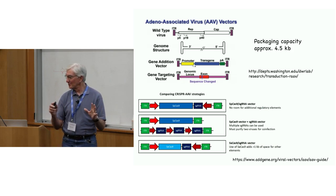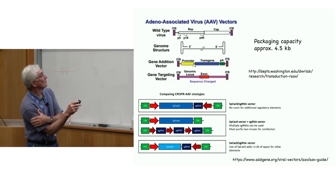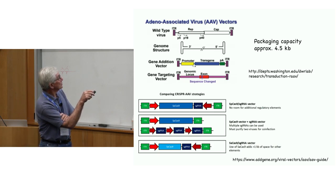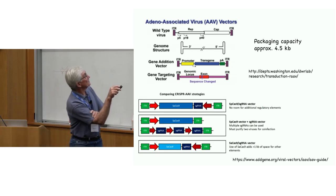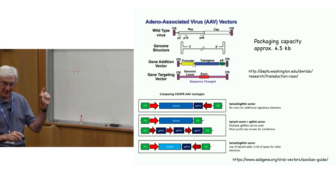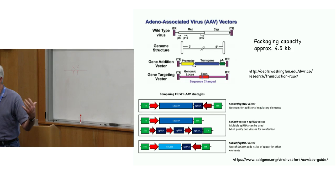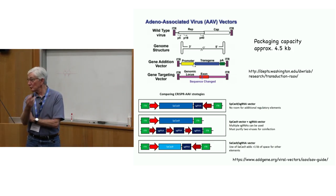Human cells tend to integrate the AAV vector at the AAVS1 site, but the viral genome will persist in cells even without integration for quite some time. You can also use the vector to carry a donor sequence for gene targeting. A donor in an AAV vector doesn't tend to get concatenated, which might otherwise remove it as a functional donor. The fact that it's at least partly single-stranded may also contribute to its efficacy as a donor.